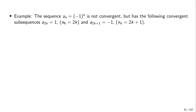In this case the sequence n_k of natural numbers is 2k — the sequence of even numbers — it's a strictly monotonically increasing sequence of natural numbers. For a_{2k} we get the constant sequence equal to one, so the subsequence with the even indices is constant and convergent to the limit one. We could also choose the sequence of odd indices; then the subsequence converges to minus one. So from this non-convergent sequence we can find two convergent subsequences.